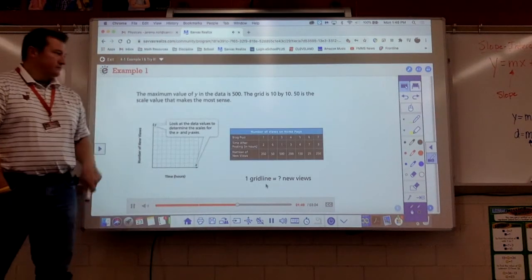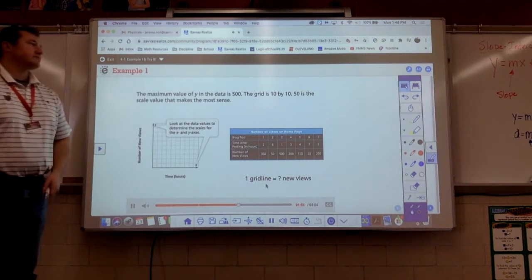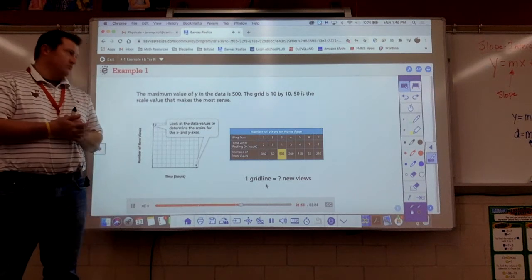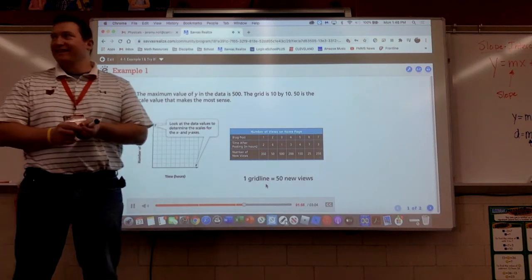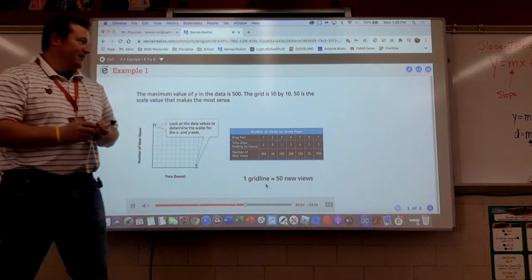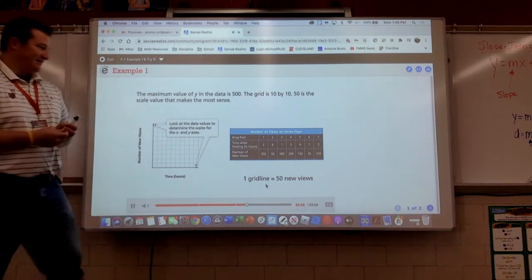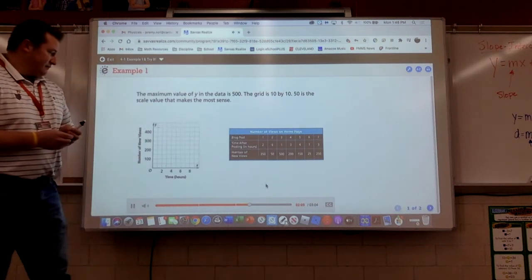No. So, again, too big, way too small, right? If we counted, look, we need to get all the way up to 500, guys. We should pick, you want to pick the smallest, biggest number, right, if that makes any sense. How about 50? That's a good one. Because the maximum value of Y in the data is 500, and the grid is 10 by 10, 50 is the scale value that makes the most sense. Just like before, Luciana labels every other line.